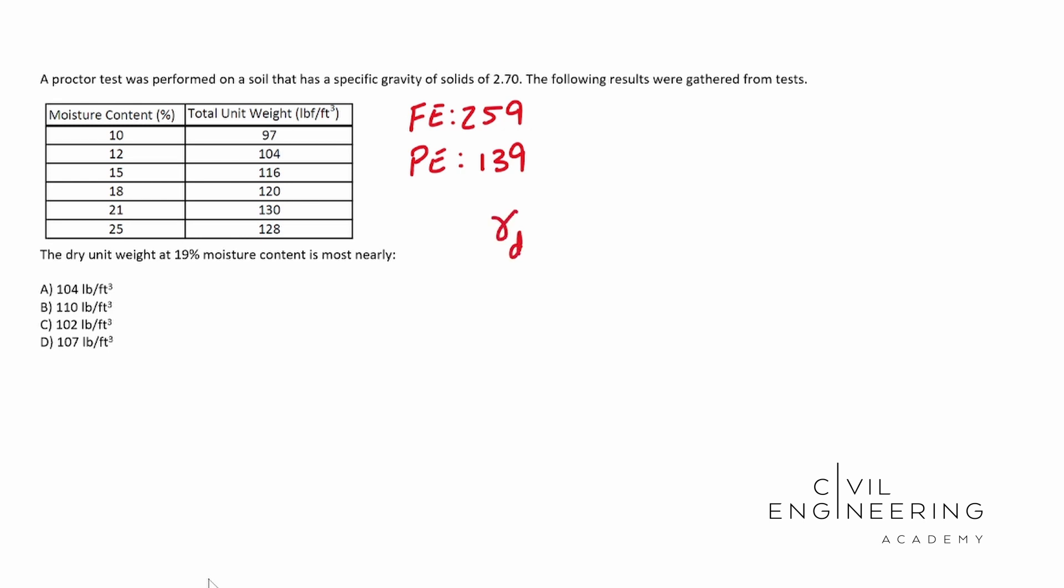Gamma D, so our dry unit weight, is equal to our gamma total, so our total unit weight over one plus the moisture content, right? We are looking at 19, which is right in between here. That's kind of what we're looking at. So our ultimate goal is to find the dry unit weight.